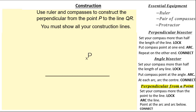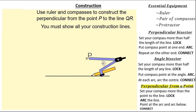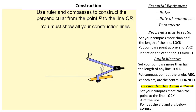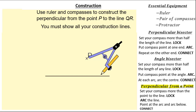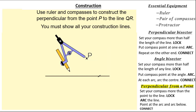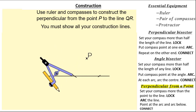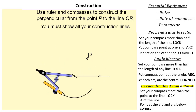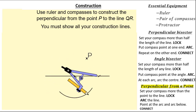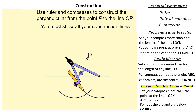Getting my compass, it's important to set the distance between the compass point and the pencil to be more than the distance between the point and the line — so around about here — and lock my compass. Putting my compass point at point P, I'm going to arc the line here and here. Where I've arced, I'm going to move my compass point to those arcs and arc below. Moving my compass point to the other arc, I arc below again. I've got a point of intersection, so all I need to do is connect from my point P to the intersection.